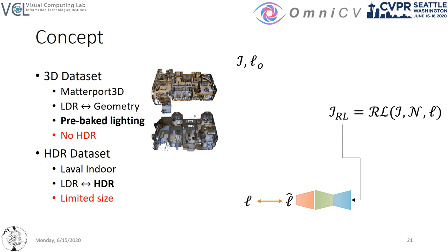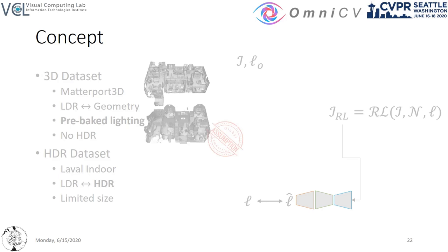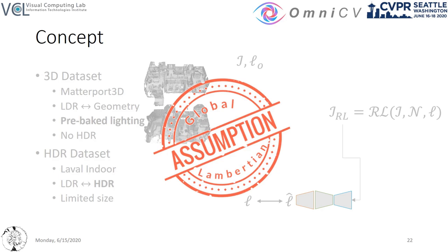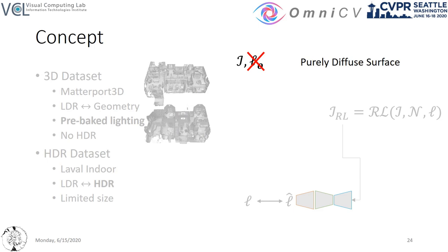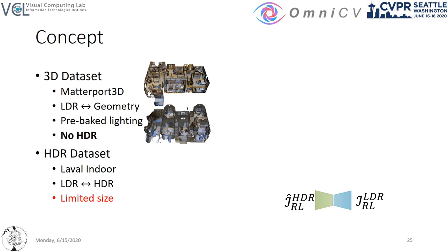This concept crucially relies on a global Lambertian assumption for the original image and scene. This widely used assumption is a practical approach to alleviate the complexity of natural illumination. Under this assumption, we consider that the original image with pre-baked lighting is a purely diffuse surface, and thus we can effectively ignore its original lighting conditions. In addition, we need to overcome the lack of HDR information. As shown in Neural Illumination, employing an intermediate LDR-to-HDR image translation task in the end-to-end model increases overall performance.